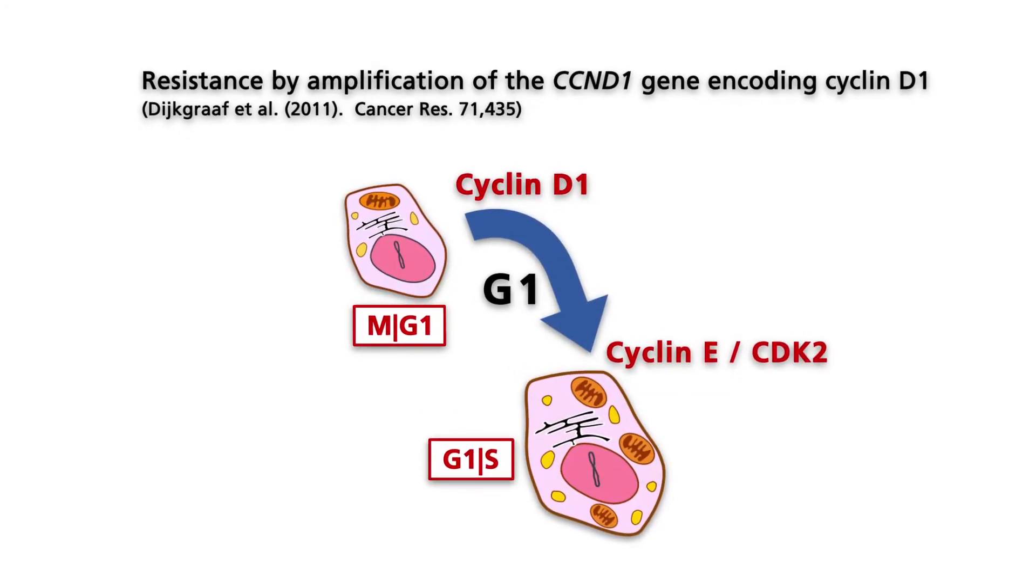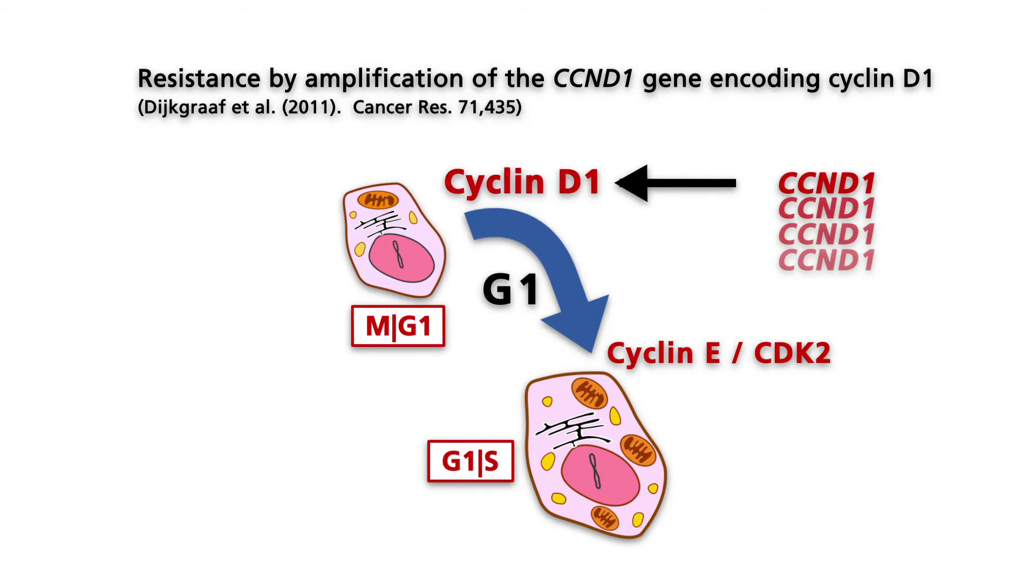In addition, amplification of the CCND1 gene has been observed in resistant cell clones. Because the cyclin D1 encoding CCND1 gene is one of the target genes activated by the hedgehog pathway, the CCND1 gene can be transcribed independently of the hedgehog signal.